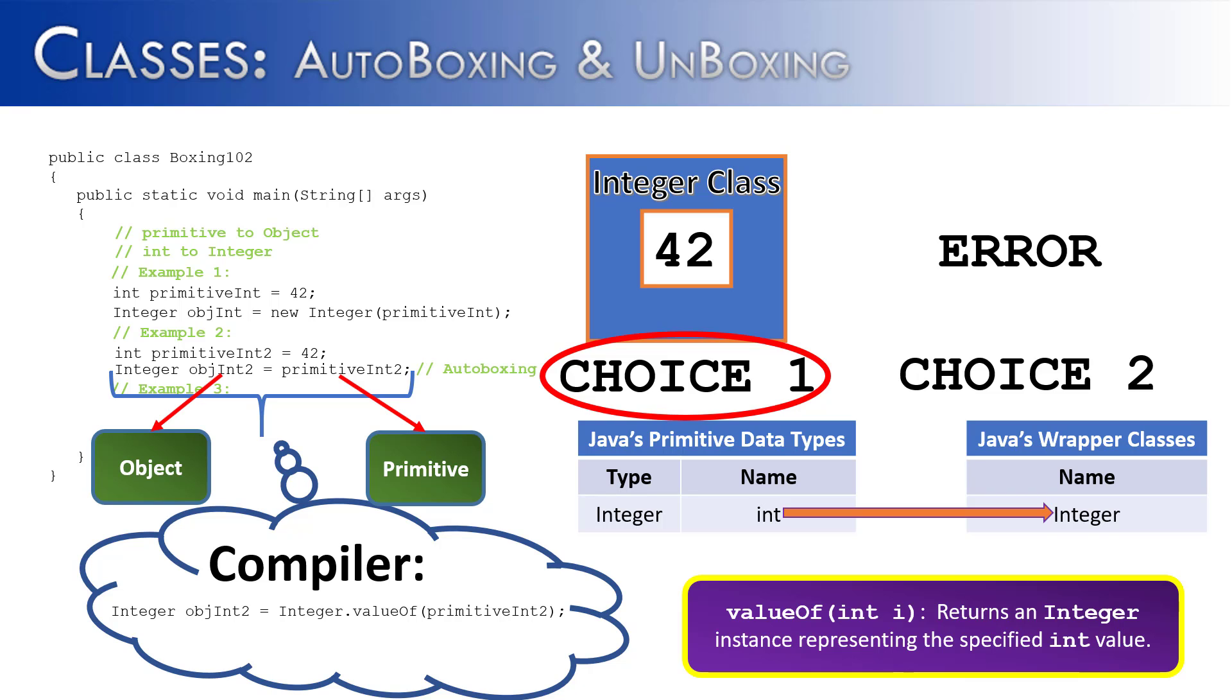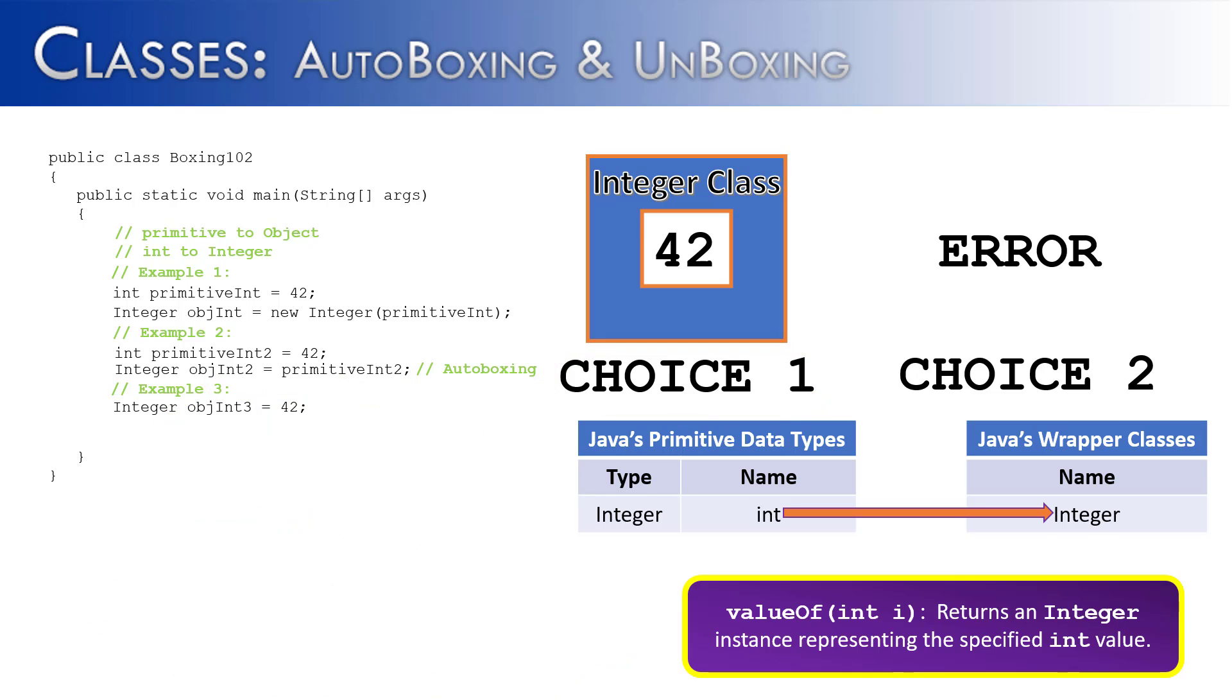So this is our example of autoboxing, moving from a primitive into an object. Let's look at example 3. It's close to example 2, except for now we're just doing it in one line.